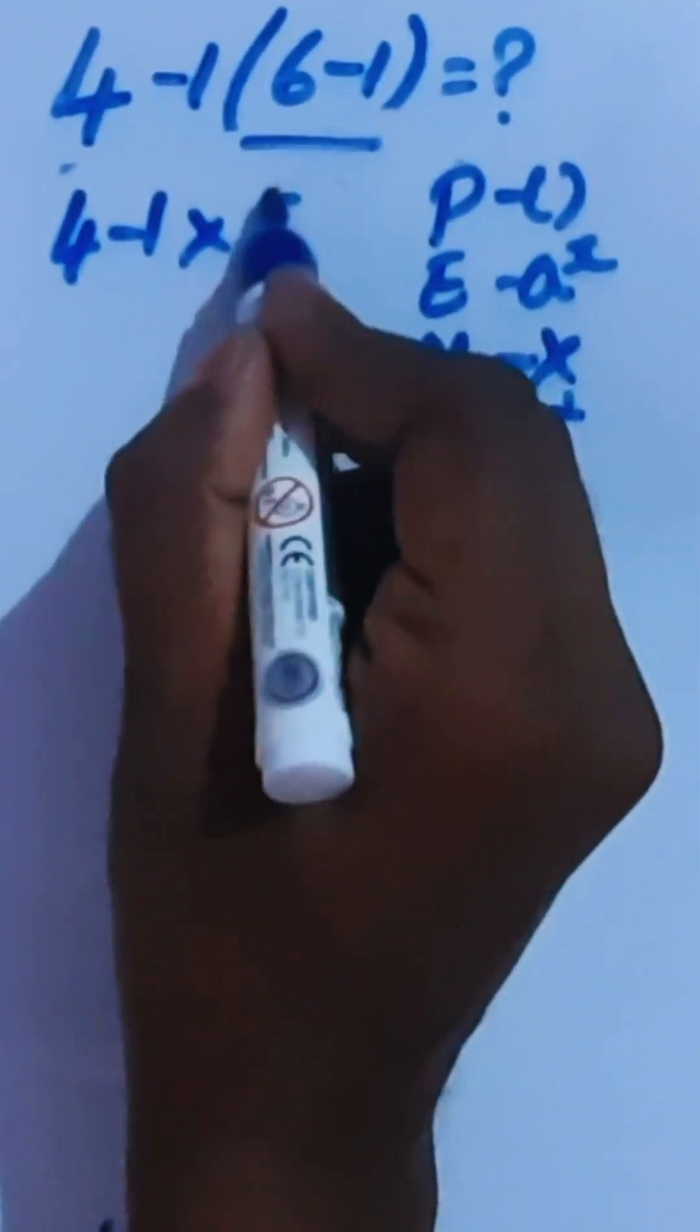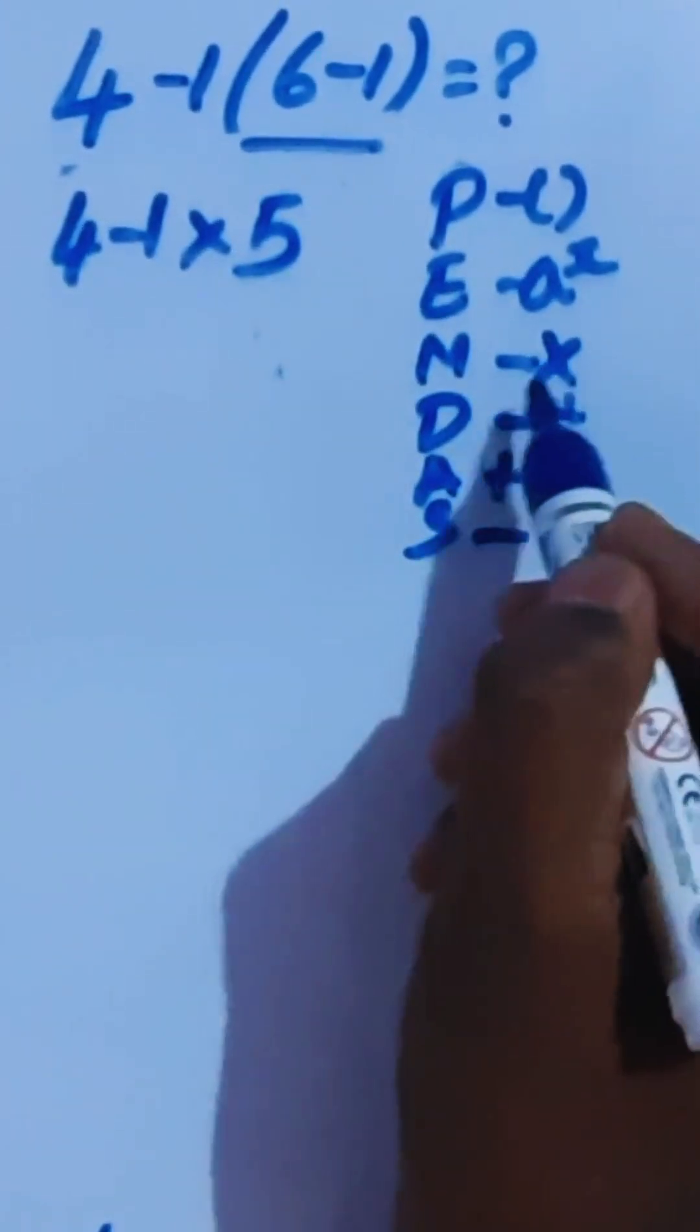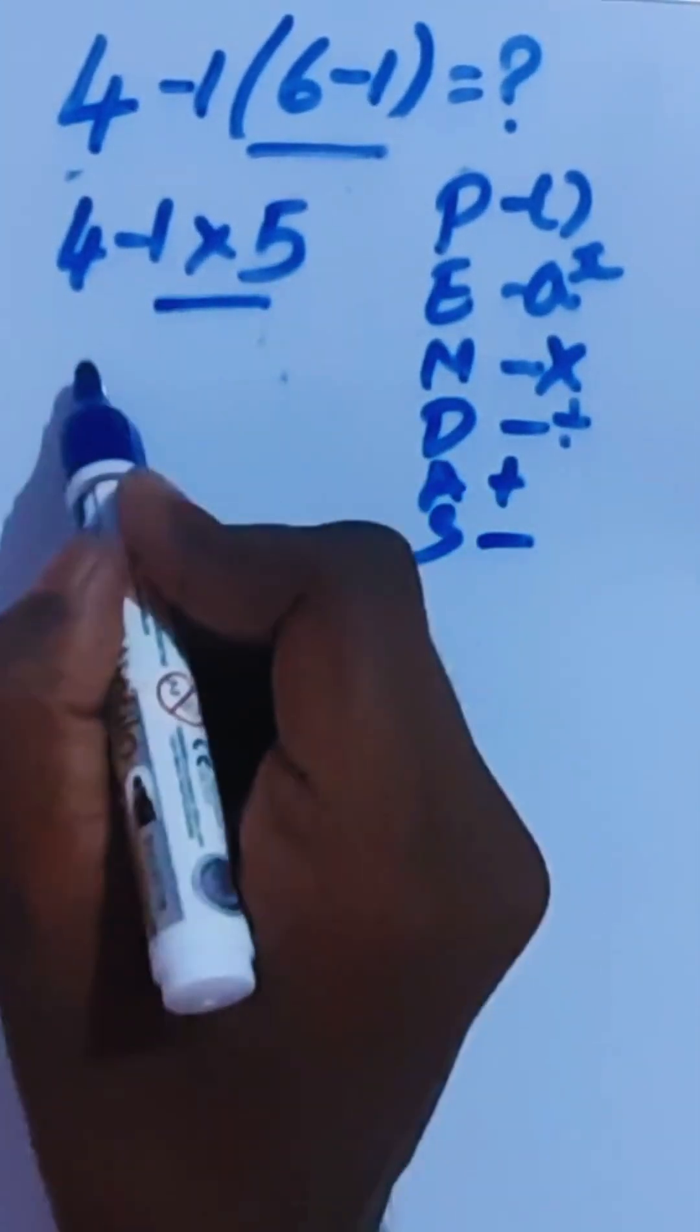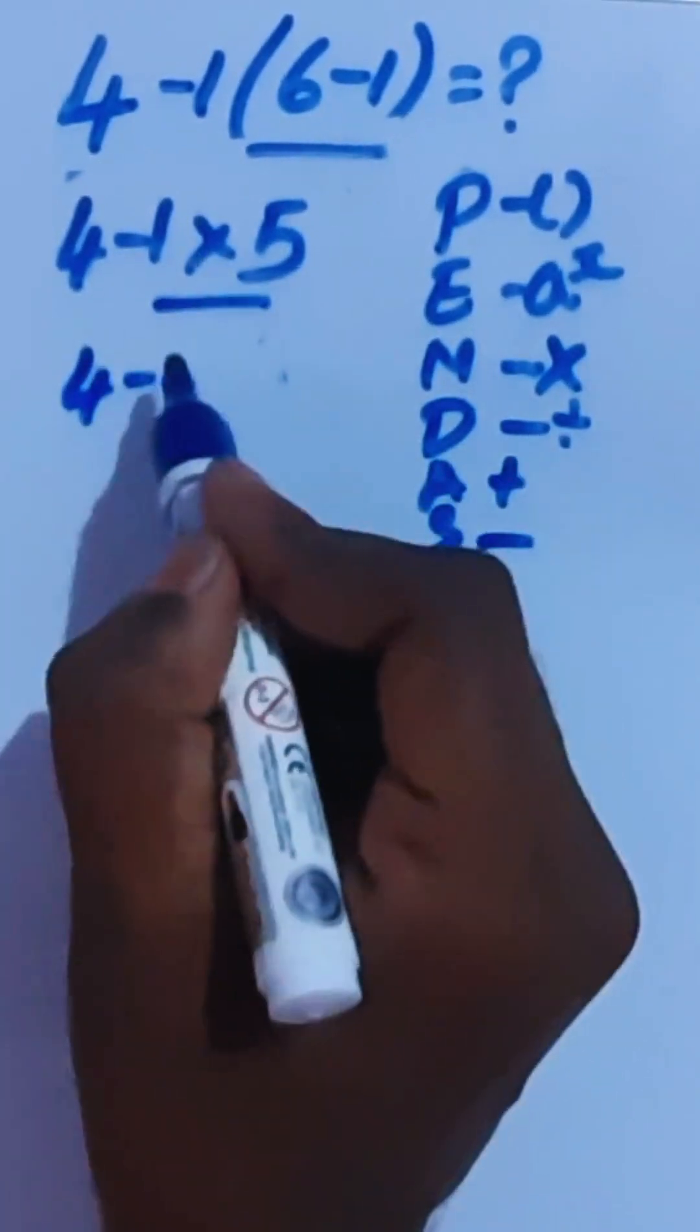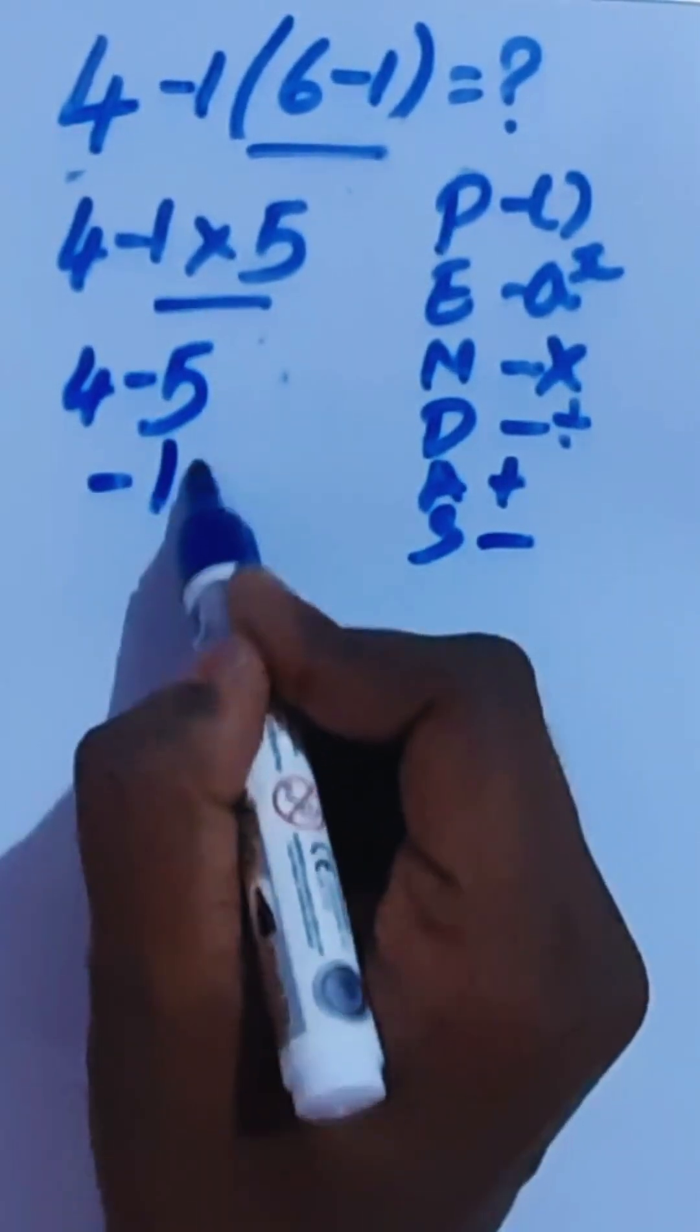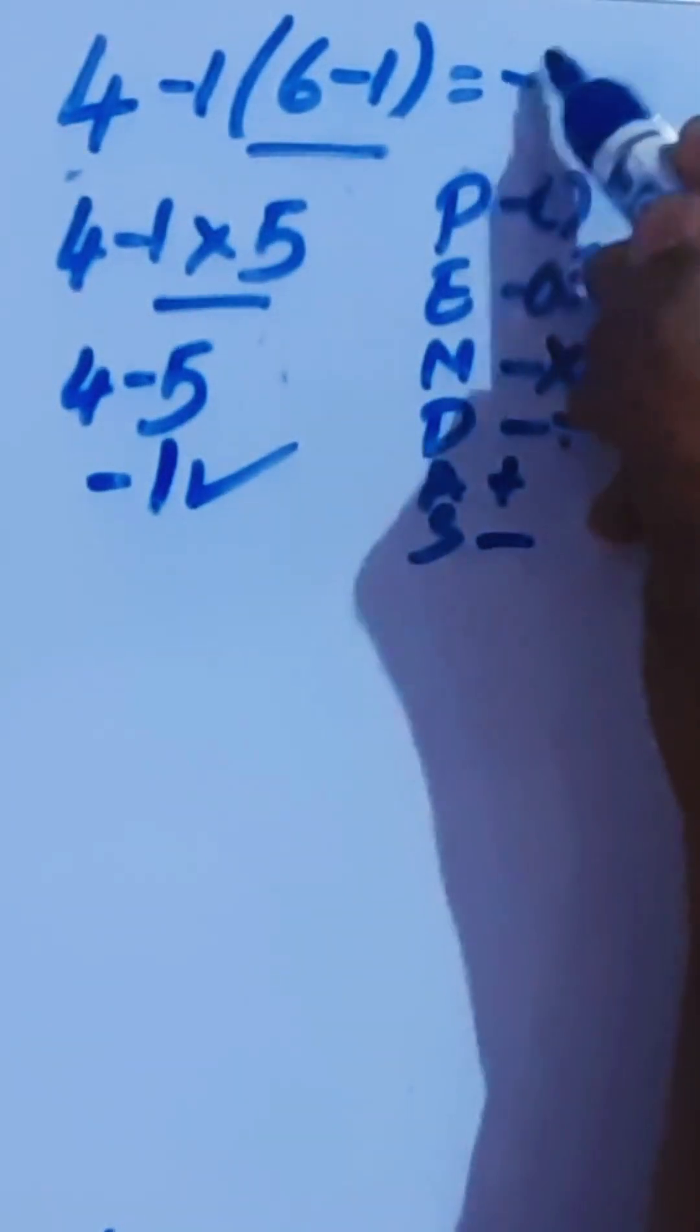Here we have subtraction and multiplication. Multiplication is higher priority than subtraction, so we have to do 1 times 5 first. 4 minus 5 equals negative 1, which is the correct answer. The answer is negative 1.